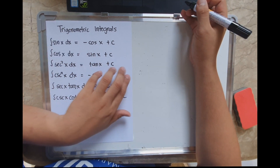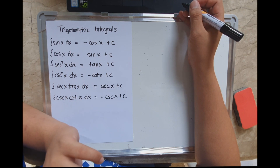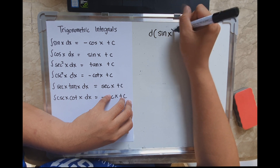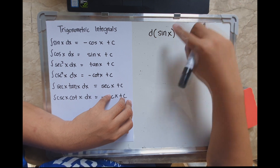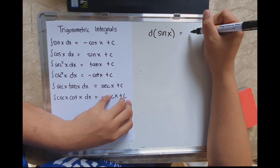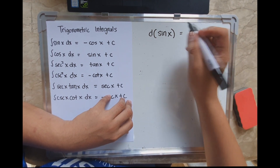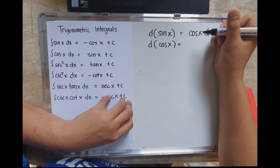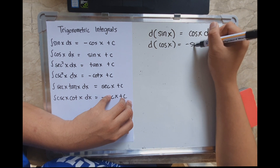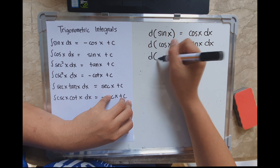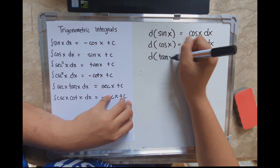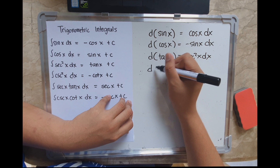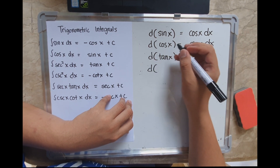Where did we get this? Basically, these are the reverse of the differential trigonometric functions. The derivative of sin(x) is cos(x) dx; the derivative of cos(x) is negative sin(x) dx; the derivative of tan(x) is sec²(x) dx.